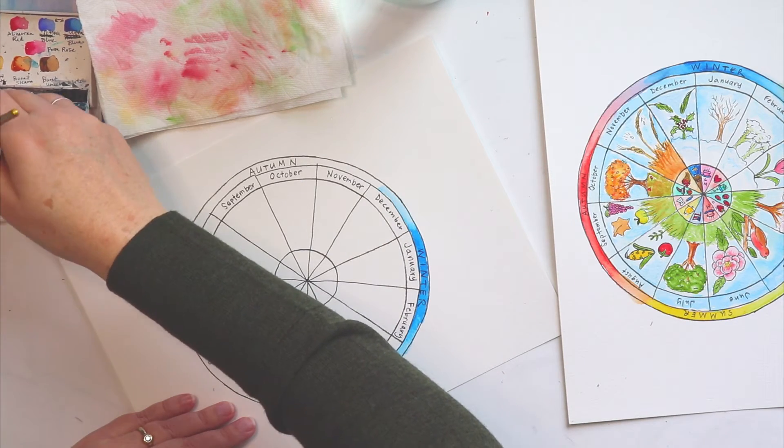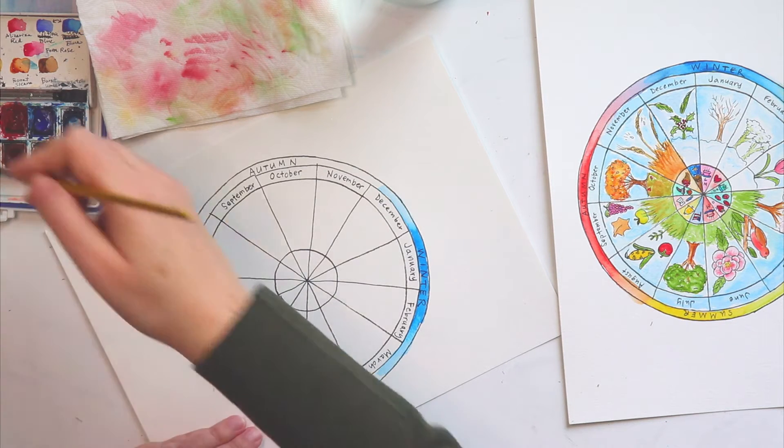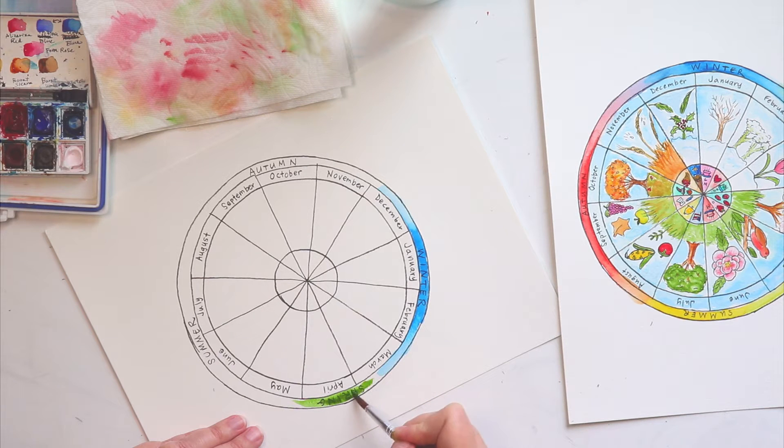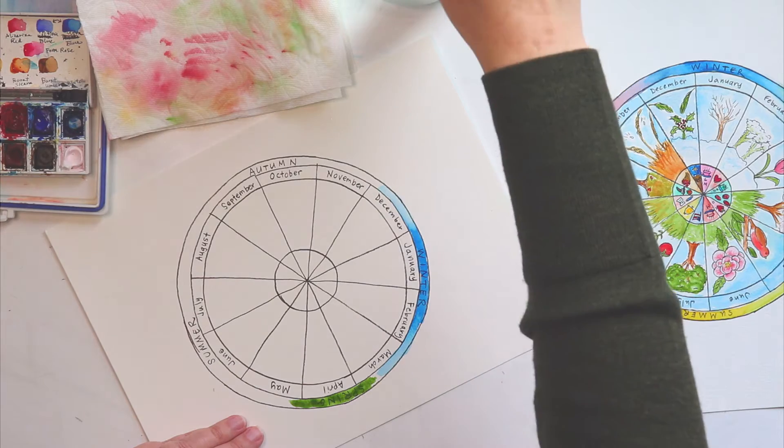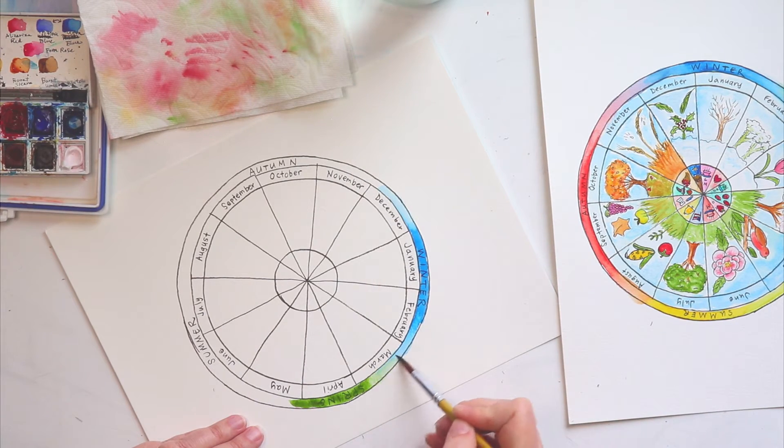And then for spring, I'm doing my sap green. I'm going to start that right there in the middle. Nice and green. Then I'm going to wash my brush off, and then I'm going to let these two colors meet. I'm just going to let them run into one another.